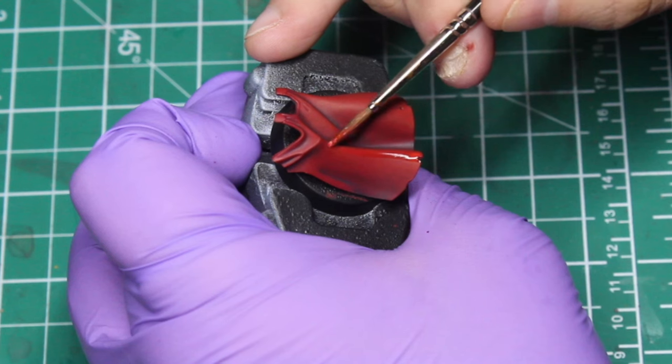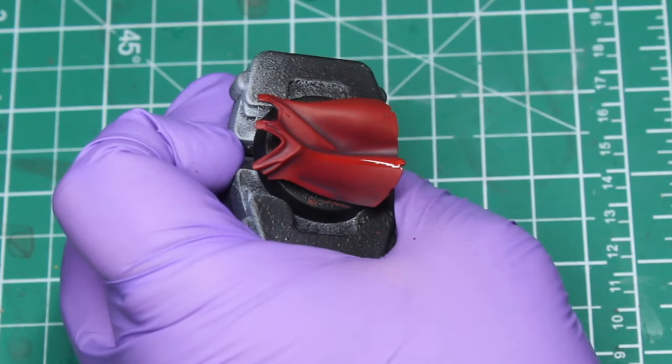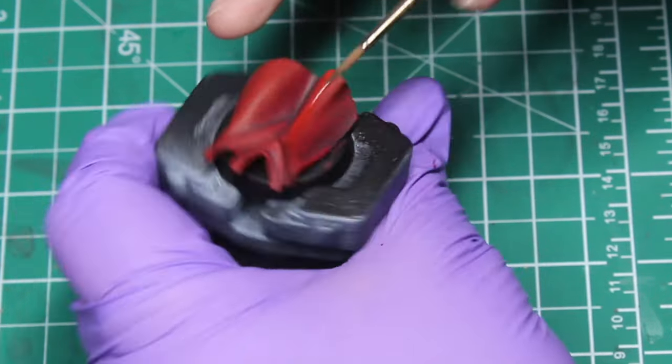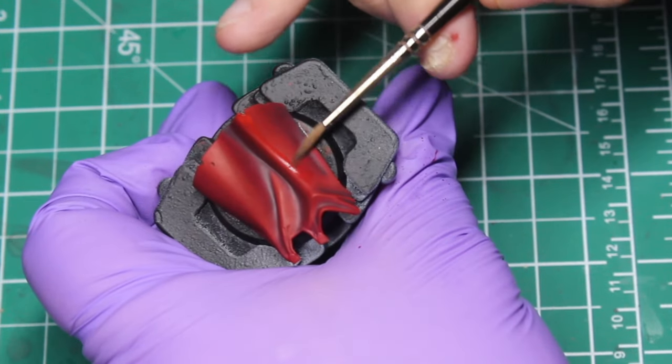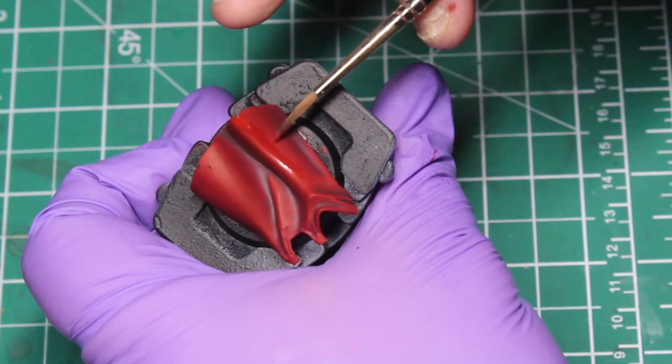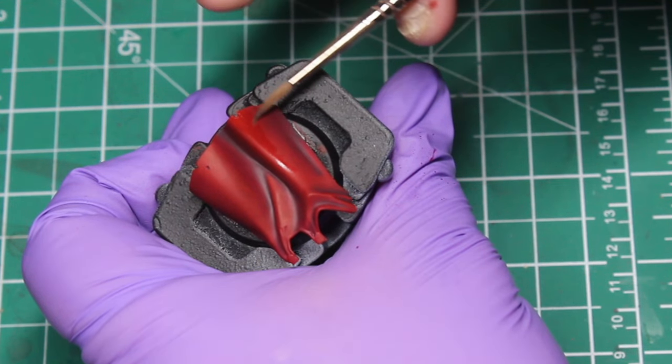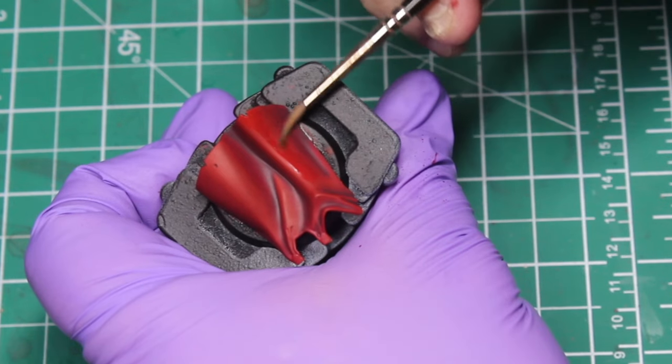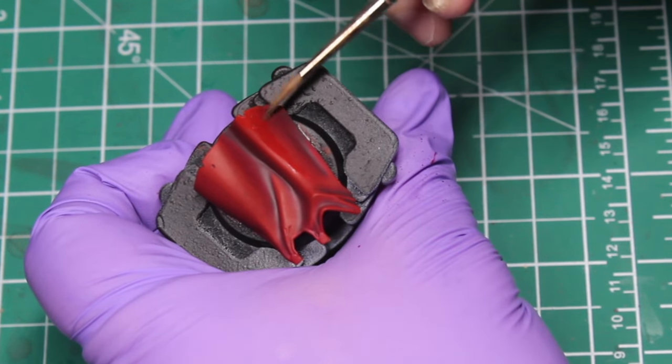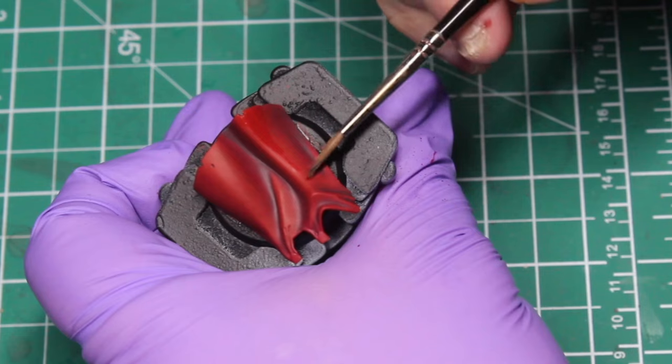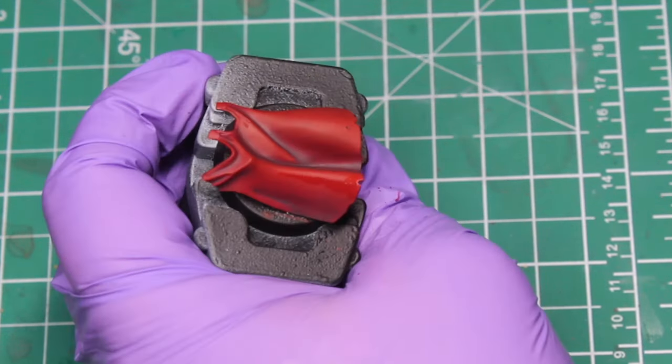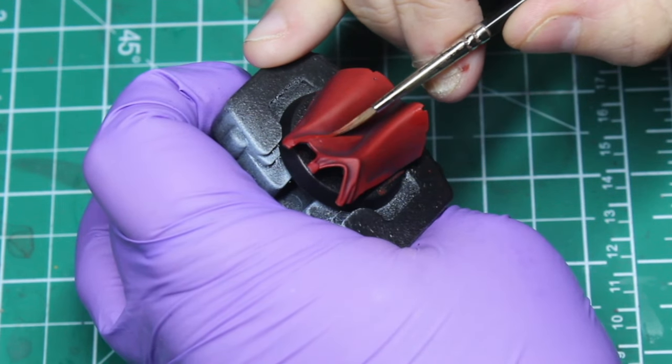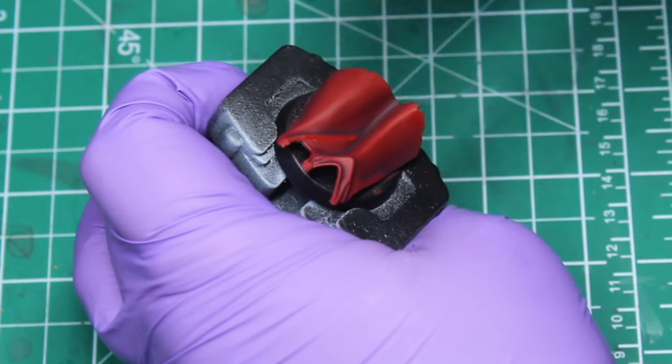Now using some pure Evil Sunz Scarlet. Once you've done the mix a little bit, you want to get some pure Evil Sunz Scarlet and you want to be focusing this on the real uppermost parts of the folds. It's not like armor, so you don't have sharp edges and lines. You want to have the first real highlight, which is what this is, to be a lot softer.